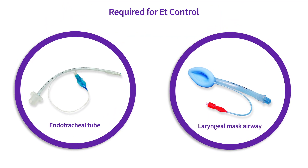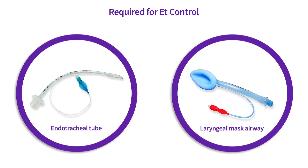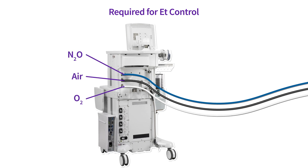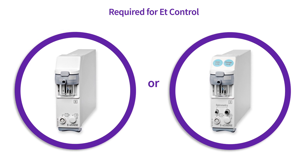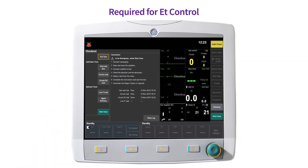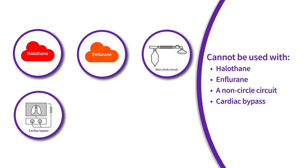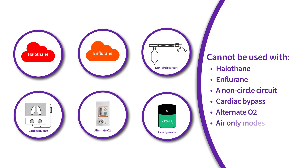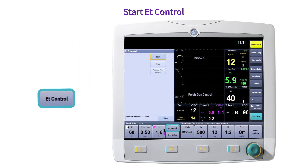Prior to initiating end-tidal control, a controlled airway such as an endotracheal tube or laryngeal mask airway should be used. The ACES CS2 anesthesia delivery system should have a supply of oxygen and balance gas to enter end-tidal control mode. A CARESCAPE airway module with end-tidal control capabilities should be installed and warmed up. A full test checkout should be completed prior to use. It is important to note that end-tidal control cannot be used with halothane, enflurane, a non-circle circuit, cardiac bypass, alternate O2, or air-only modes.